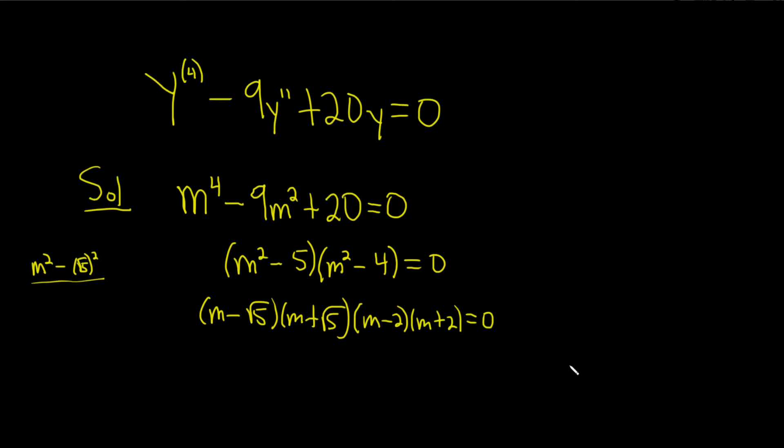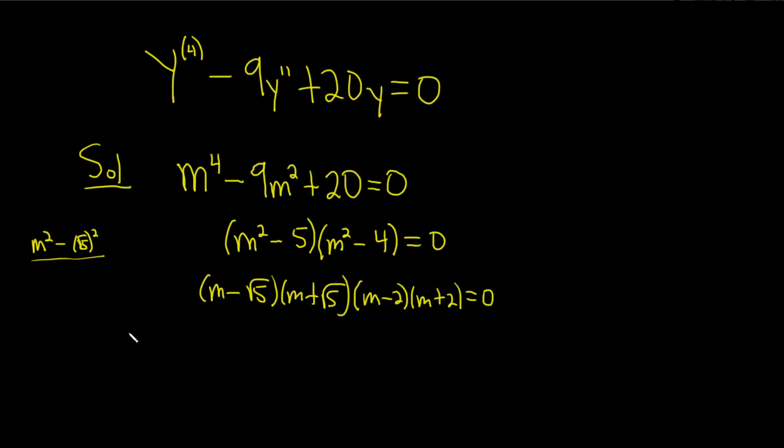So we end up with four distinct real roots. We end up with m equals square root of 5, m equals negative square root of 5, m equals 2, and then m equals negative 2.